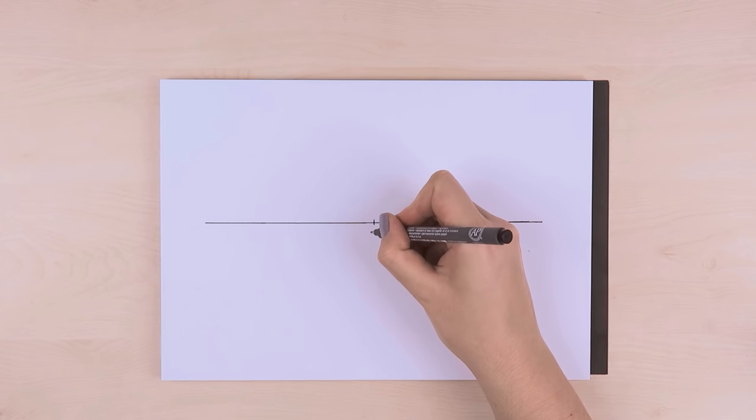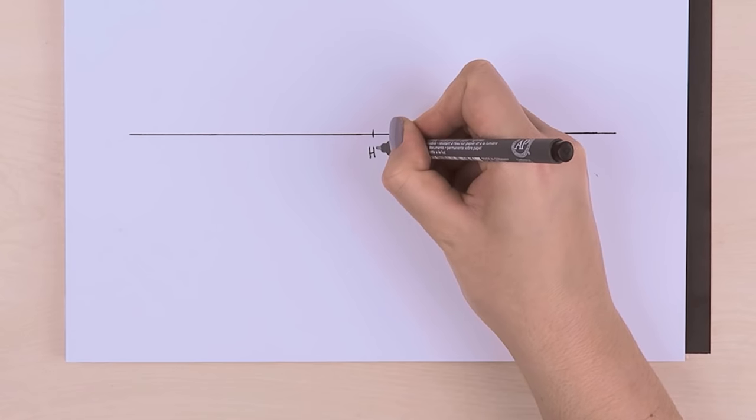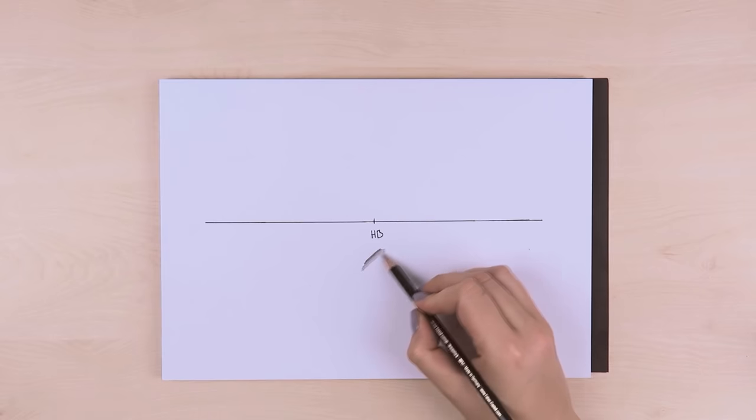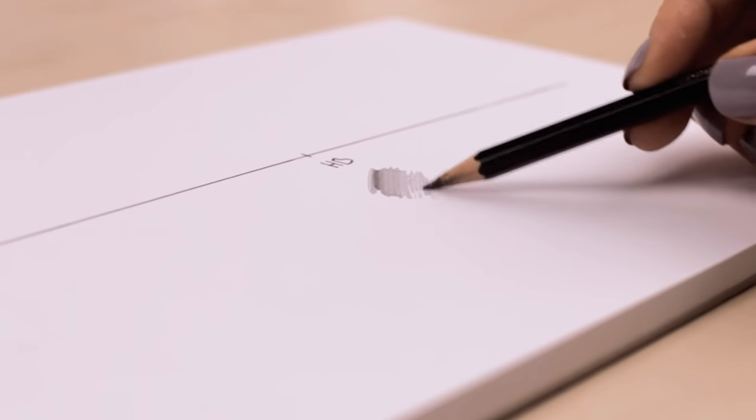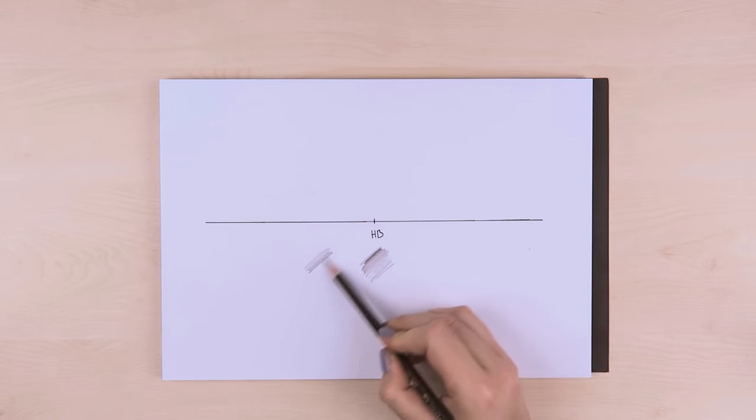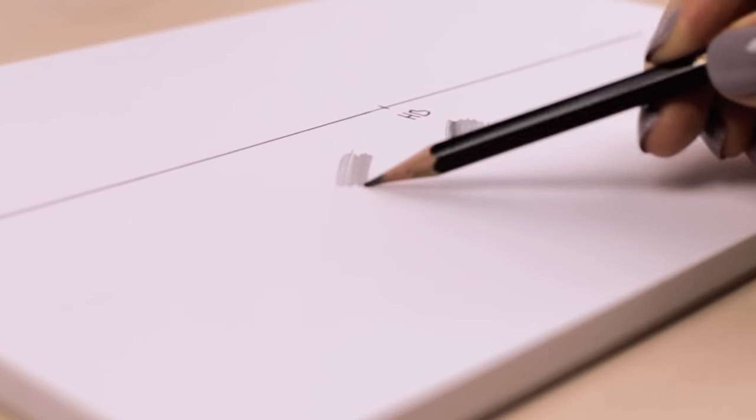So for H pencils, the higher the number, the lighter and harder the pencil becomes. An HB pencil is something in the middle of an H and a B pencil, which I also use most of the time for quick sketches and drawings.